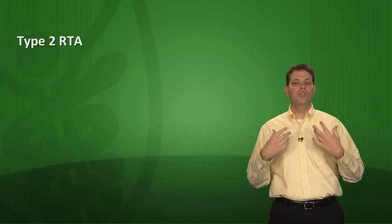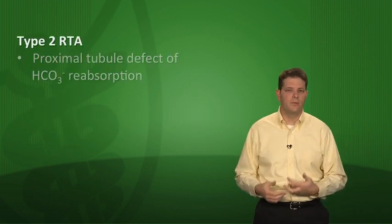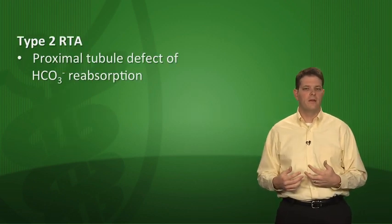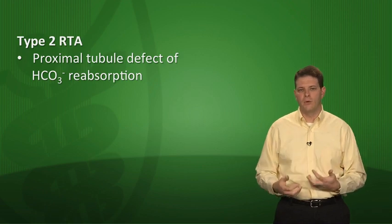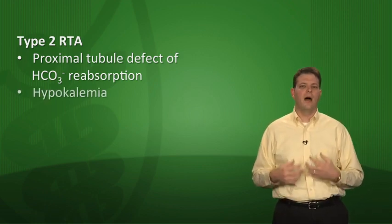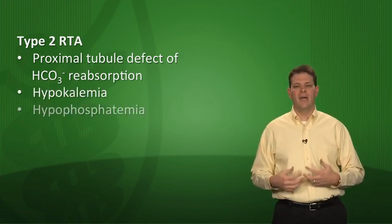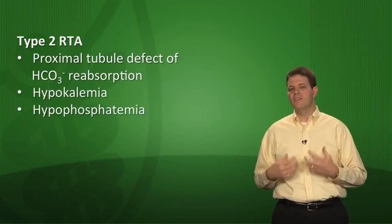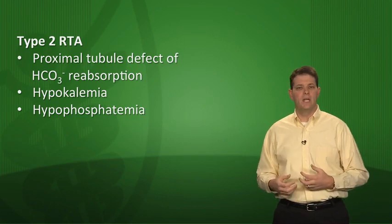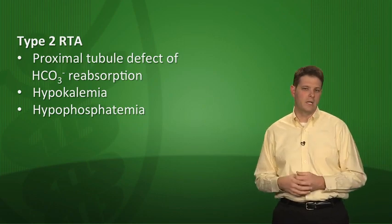Type 2 RTA is a proximal tubule defect affecting bicarb reabsorption. It's associated with hypokalemia and hypophosphatemia, and urine pH is appropriately low.